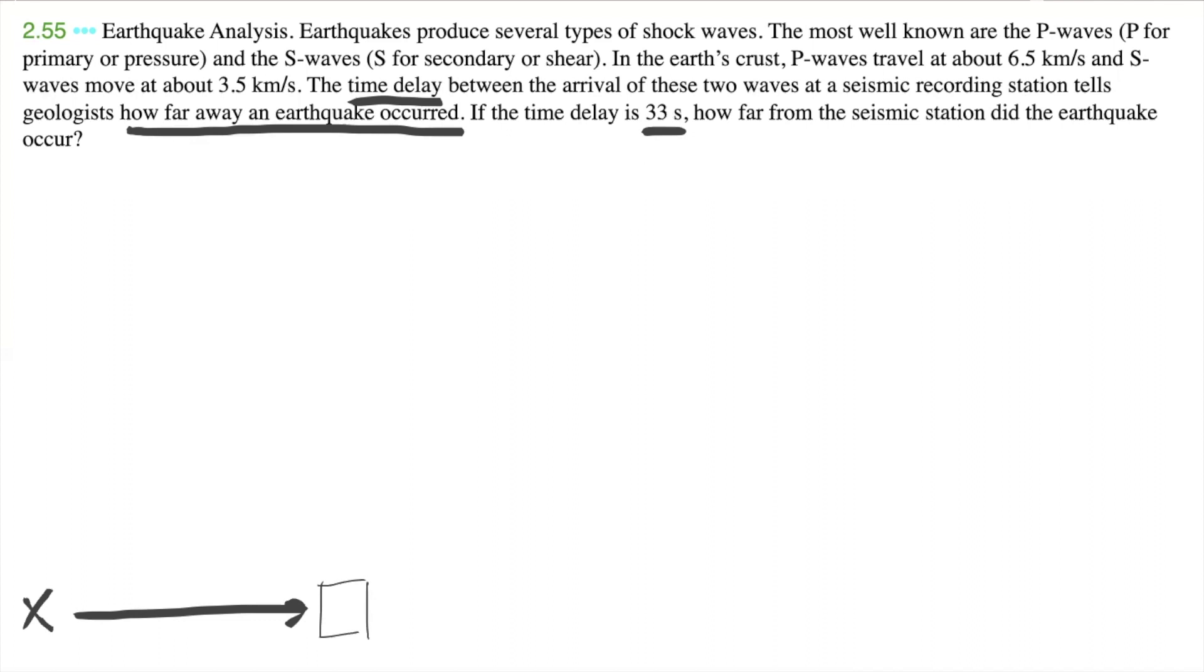So we know that P waves travel faster than S waves, so let's write that down. So we have P waves, and that is about 6.5 kilometers per second. And then we have S waves, and that is about 3.5 kilometers per second.